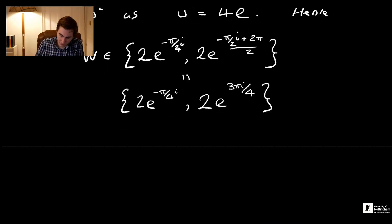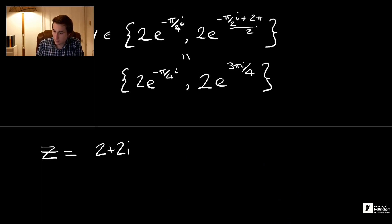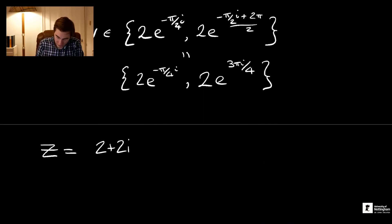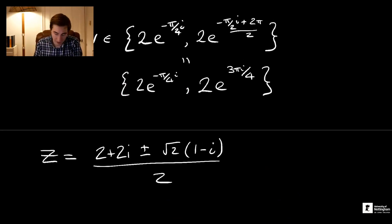Those are our two values of w. We can now substitute into our quadratic equation. That tells us z = (2+2i) ± √2(1-i) all divided by 2. I've written this in the notes because all I've done is written this back in Cartesian form. You can do that by writing it in polar form and then substituting θ = -π/4 and θ = 3π/4.